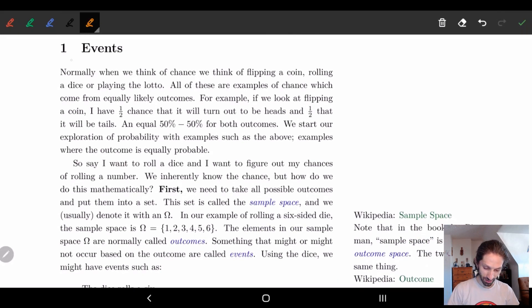We're going to start off with events. Normally when we think of chance we think of flipping a coin, rolling a die, or playing the lotto. These are all simple models of probabilistic things of chance. When you flip a coin, you have two options, heads or tails, a 50% chance to land in either of these two options. This is where we're going to come up with events and outcomes.